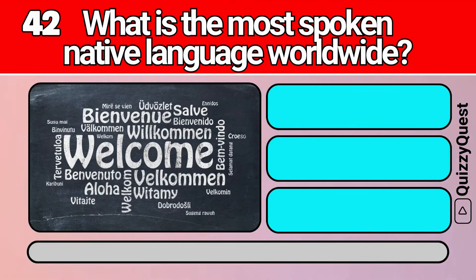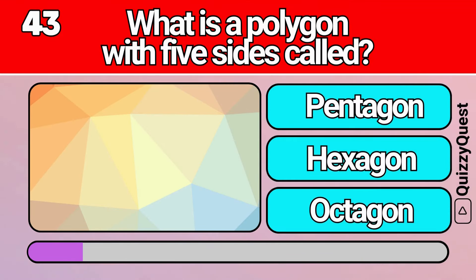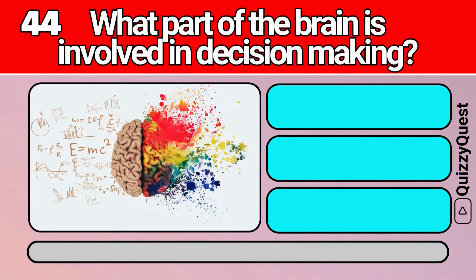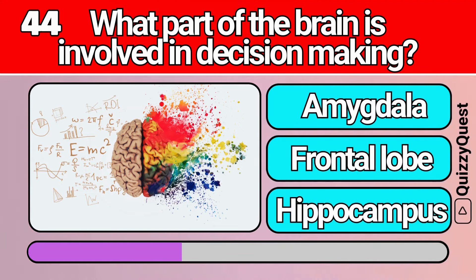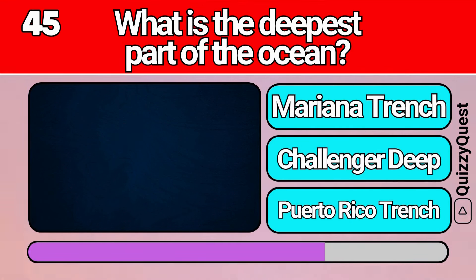What is the most spoken native language worldwide? What is a polygon with five sides called? What part of the brain is involved in decision making? What is the deepest part of the ocean? What does E=MC² represent?